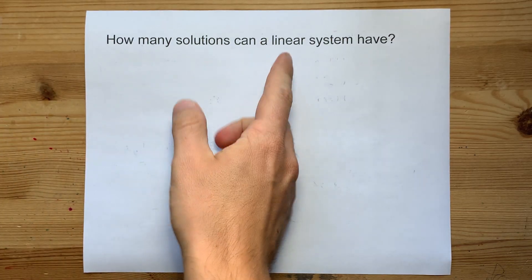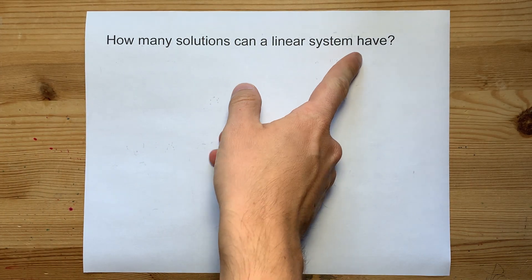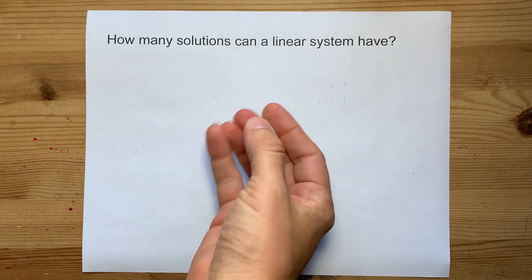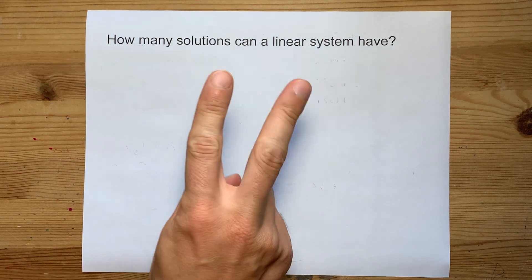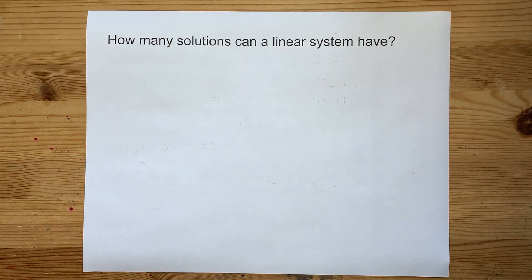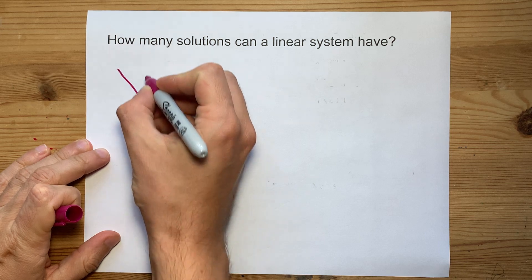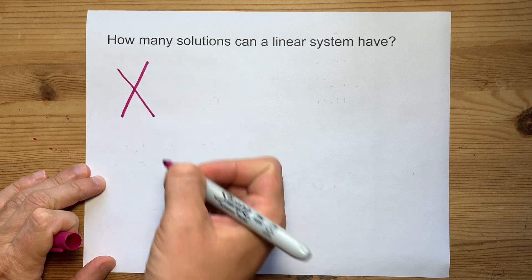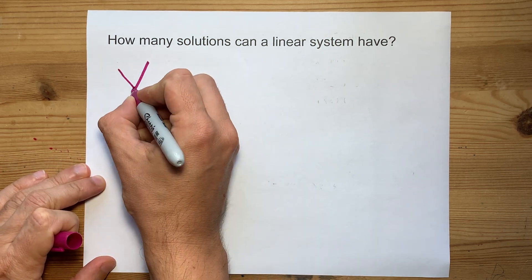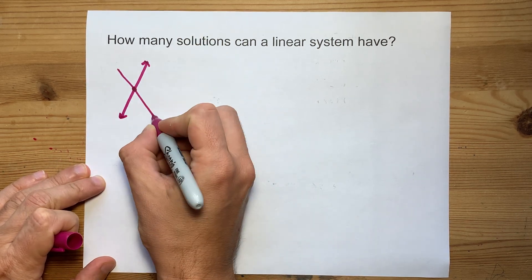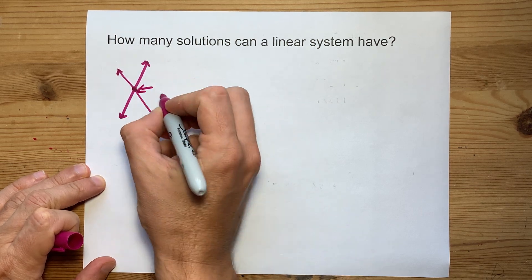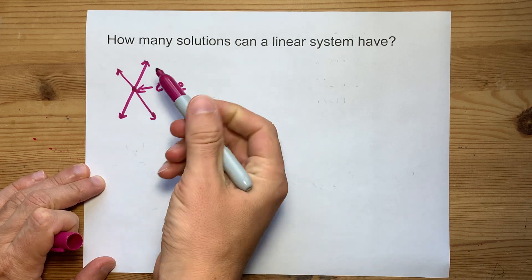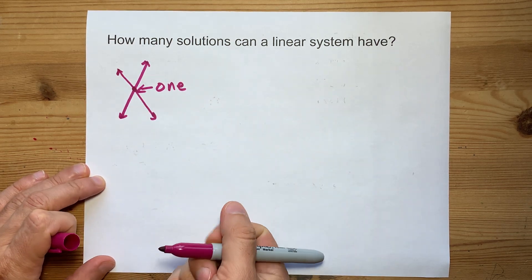How many solutions can a linear system have? A linear system is defined as two or more lines, so the real question is how many times can two lines intersect? The easiest way to think about that is two lines that don't have the same slope — they'll be slanted at different angles. These go on forever in either direction, but they only ever meet at one point. When the two lines have different slopes, there's only one solution to the linear system.